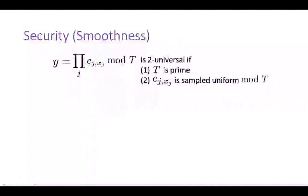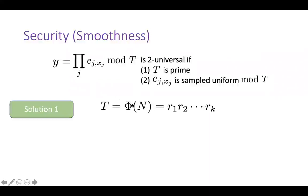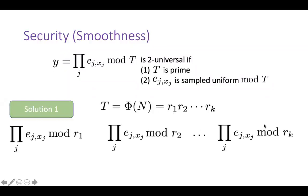We solve both issues one by one. For the first issue — composite modulus φ(N) — we factor φ(N) into prime factors r_1, r_2, …, r_k, break the original function into k components (product mod r_1, product mod r_2, …, product mod r_k), and combine them via the Chinese Remainder Theorem. If each of these k functions is smooth, the original function is smooth. Since each r_a is prime, the first condition is now satisfied.